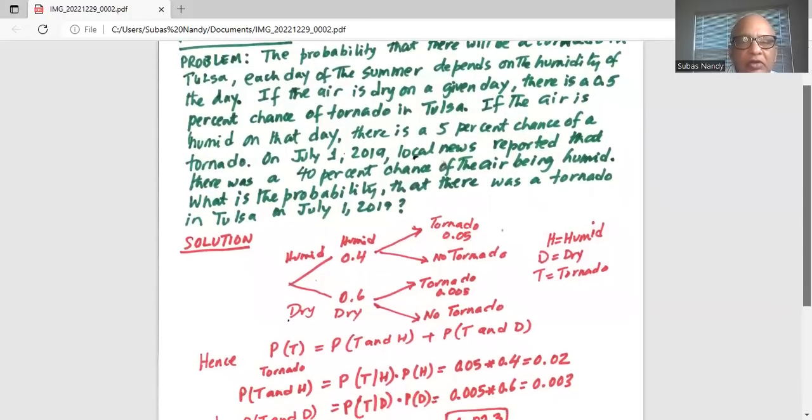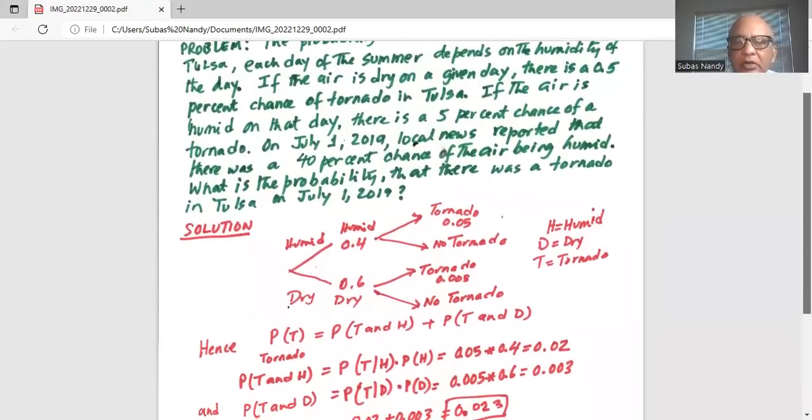So we are required to find out what is the probability of tornado on July 1, 2019. This is equal to probability of tornado and humid plus probability of tornado and dry.